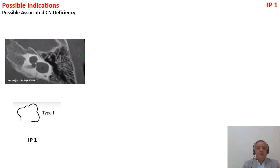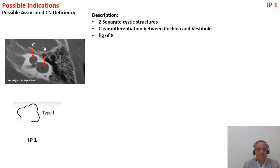IP1 is a possible indication. In IP1, both the cochlea and vestibule are cystic but there is a clear differentiation between them — two separate dysplastic cystic structures — with a figure-of-eight appearance. This is opposite to the common cavity, which is only one cavity.